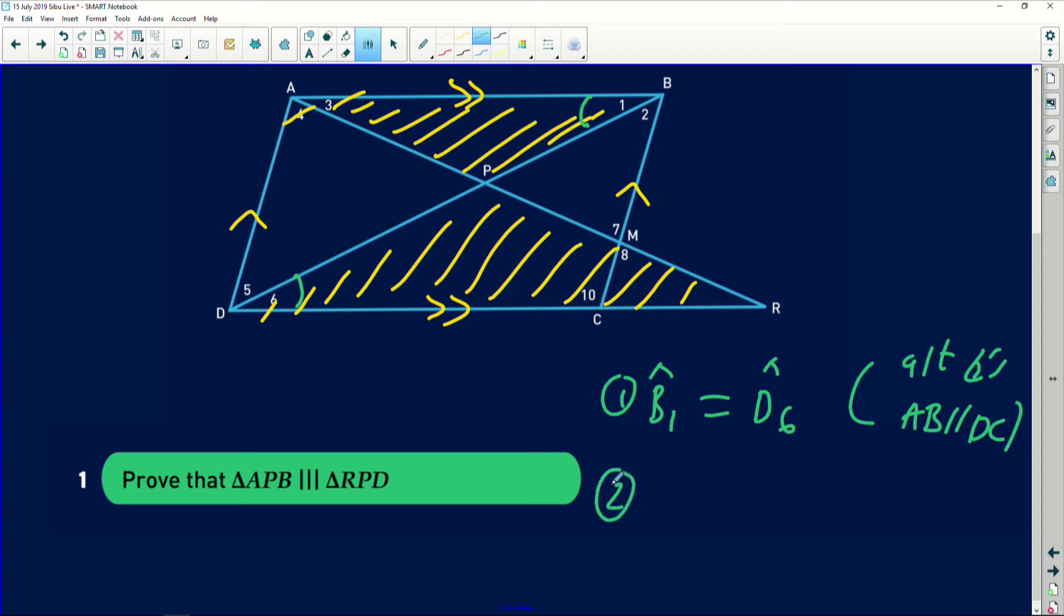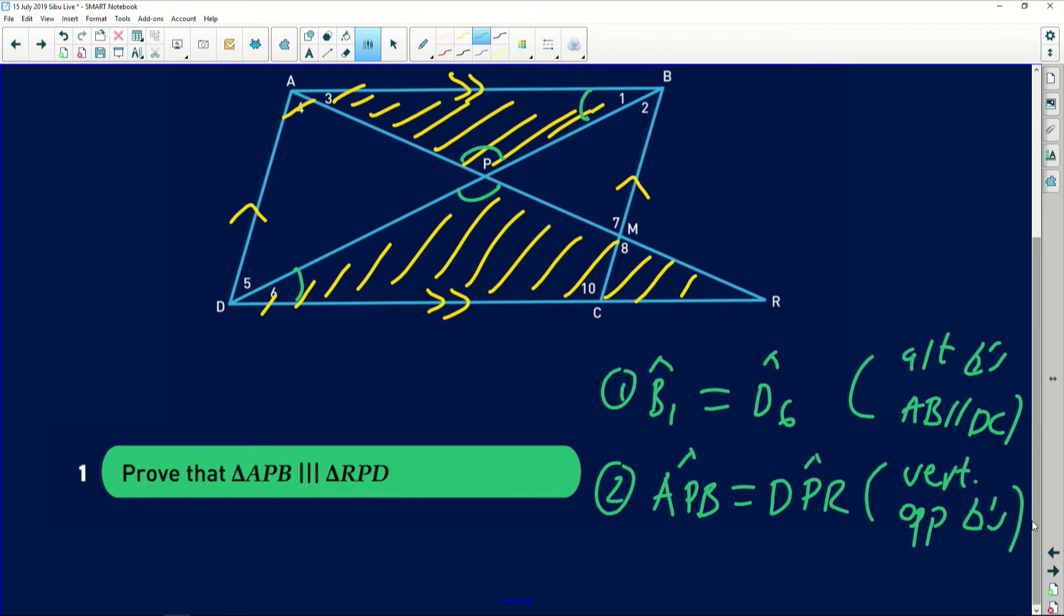The second thing we need to find there is the fact that this angle is vertically opposite to this one. So angle APB will be equal to angle DPR, and it's because they are vertically opposite to each other. They are vertically opposite angles.